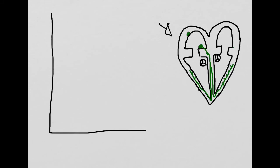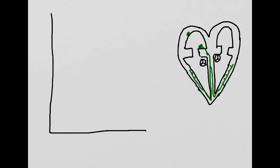As the conduction flows through the heart tissue, we are able to monitor this conduction through an EKG. The first wave of an EKG is the P wave. During the P wave, the atria are depolarizing.